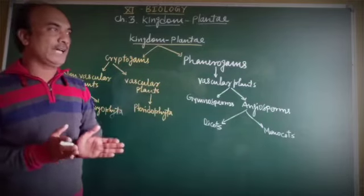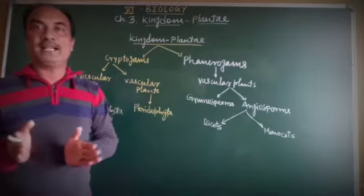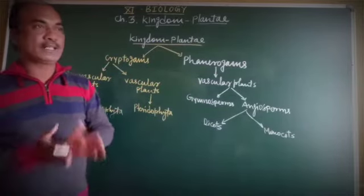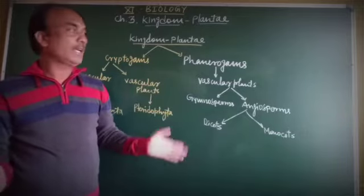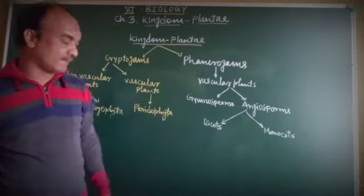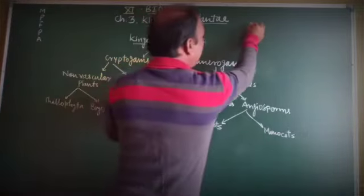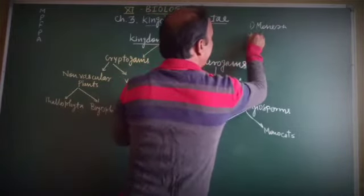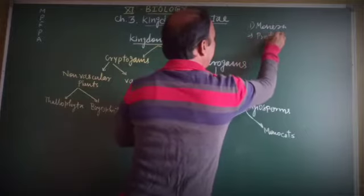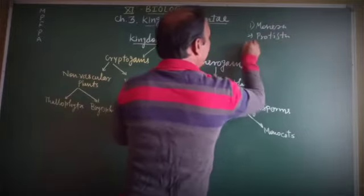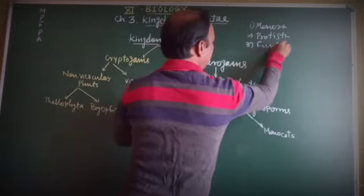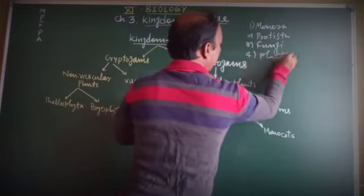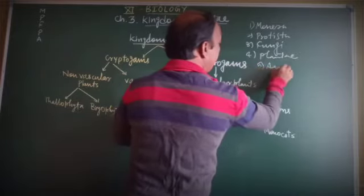According to similar and dissimilar characters, R.H. Whittaker classified organisms into the five kingdom system — Kingdom Monera, Kingdom Protista, Kingdom Fungi, Kingdom Animalia, and Kingdom Plantae.